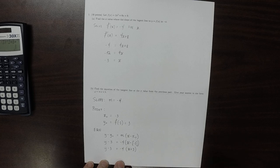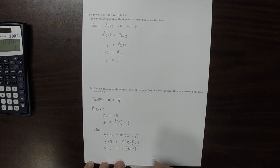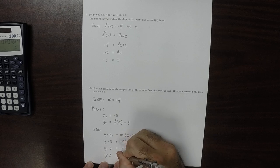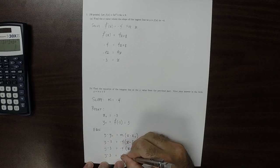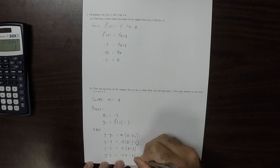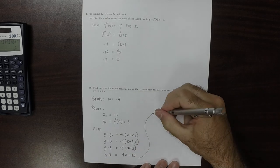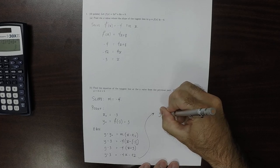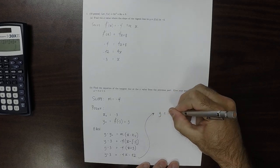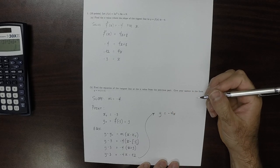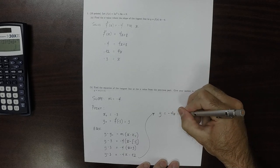Because that's x minus negative 3, distribute the negative 4. So y minus 3 is negative 4x minus 12. And then add 3 to both sides. So y is negative 4x, and then add 3 to both sides minus 9.